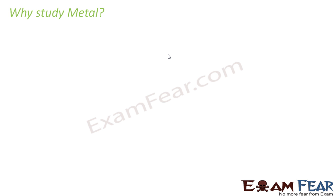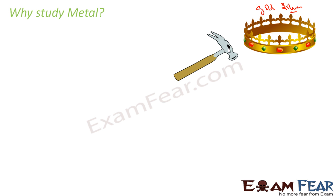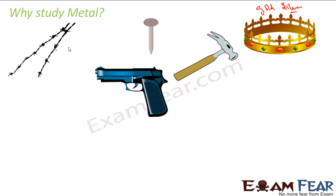Why should we study metals? If you look around, all ornaments and jewelry — a king's crown or your mom's jewelry — are generally made using metals such as gold, silver, or copper. The hammer we use at home is metal because of its high density. The nails used to make furniture are metal. The wires used for fencing are metal, and even guns used by police are made of metals.